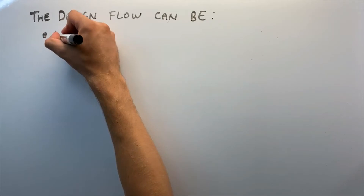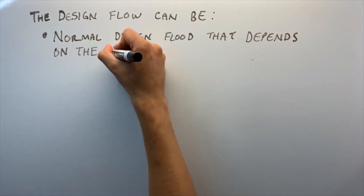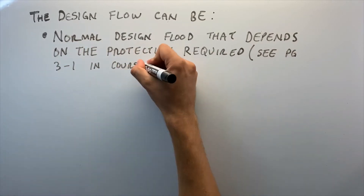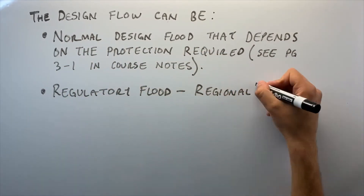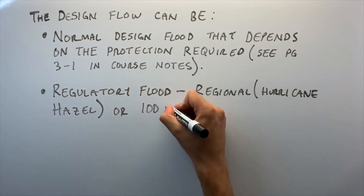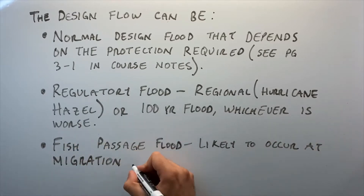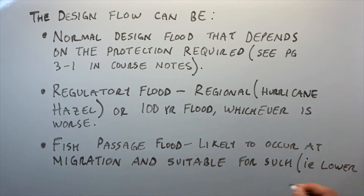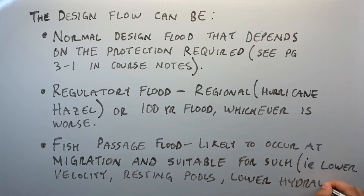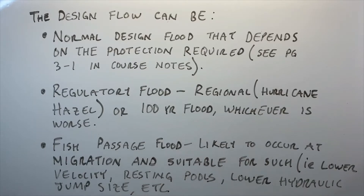The design flow can be based on the normal design flood — see page 3-1 in the class notes for more information. It can be based on the regulatory flood, i.e., the regional, being the Hurricane Hazel or the 100-year flood, or whichever is worse. Or it can be designed on a fish passage flood, likely to occur at migration and suitable for fish passage, meaning it requires lower velocity, resting pools, lower hydraulic jump size, etc.